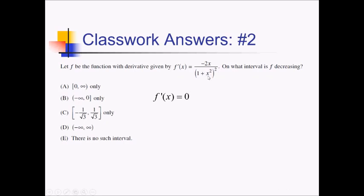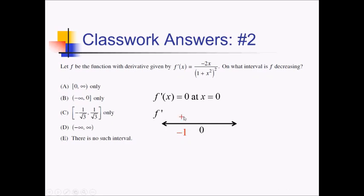It's just where we get 0 for the whole derivative, and that's going to be where the numerator equals 0. Negative 2x equals 0 when x is 0. So that's our sole critical value. On the f' number line, the denominator is always positive because it's inside squared parentheses, so it's all up to the numerator. Negative 2 times negative 1 gives a positive to the left of 0, and negative 2 times positive 1 gives a negative to the right. We want decreasing intervals, so that's where f' is negative: from 0 to infinity, which is answer choice A.